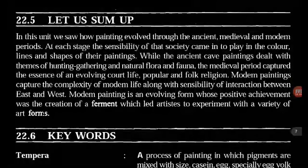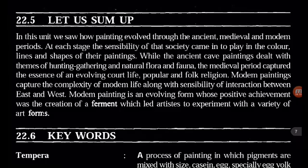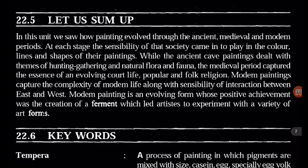Summary: In this unit we saw how painting evolved through the ancient, medieval, and modern periods. At each stage the sensibility of that society came into play in the colour, lines, and shapes of their paintings. While the ancient cave paintings dealt with themes of hunting, gathering, and natural flora and fauna, the medieval period captured the essence of an evolving court life and popular and folk religion. Modern paintings capture the complexity of modern life along with the sensibility of interaction between East and West. Modern painting is an evolving form whose positive achievement was the creation of a ferment that leads artists to experiment with a variety of art forms.